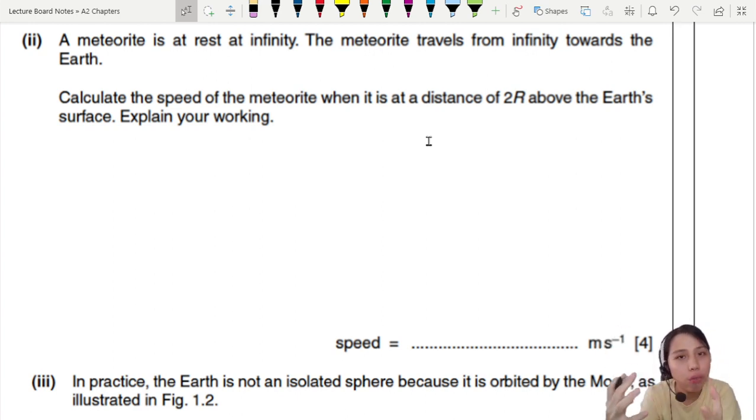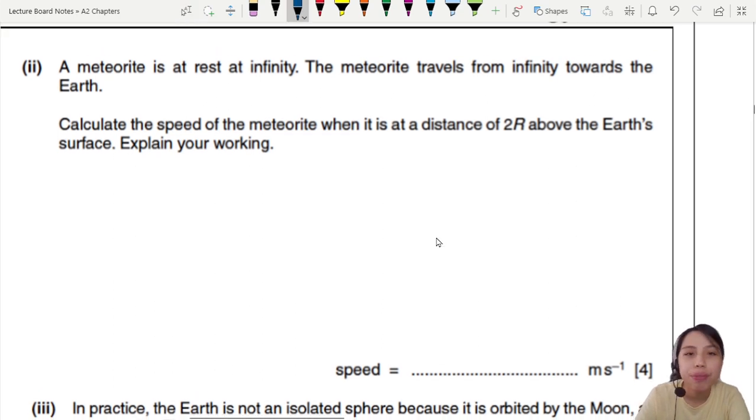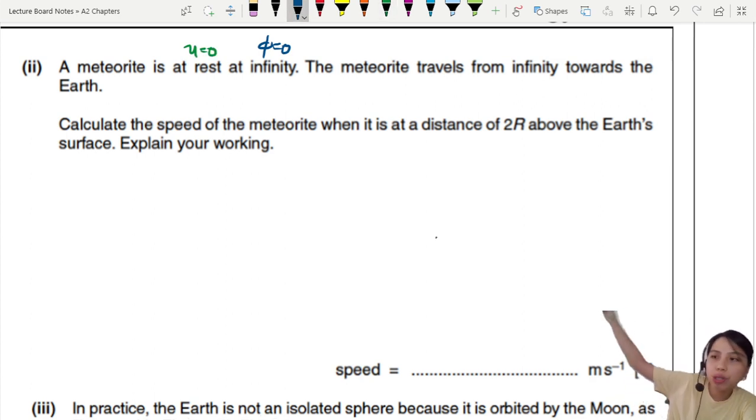So now you have a meteorite, like a chunk of rock, at rest, at infinity. Very, very, very far away. At infinity, we assume the potential is zero. At rest means, initially, at rest. Okay, so that means the initial velocity, U, is zero.